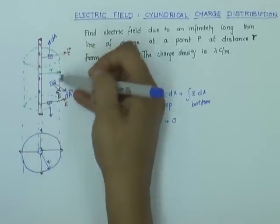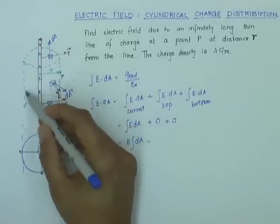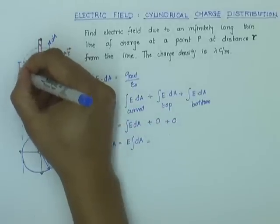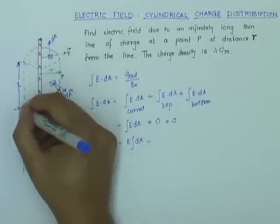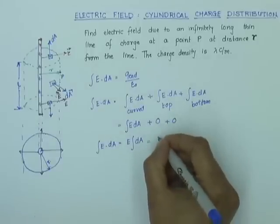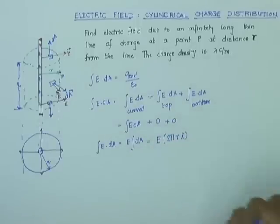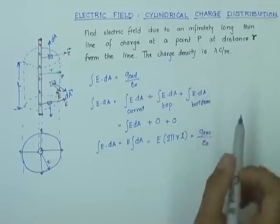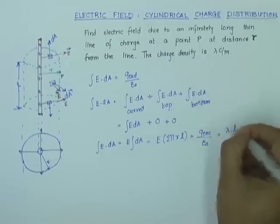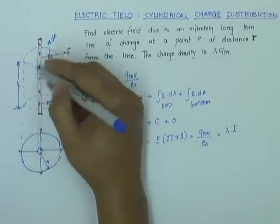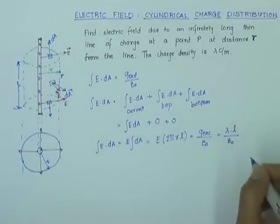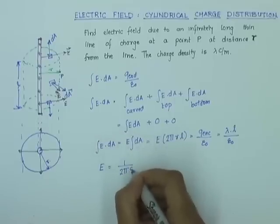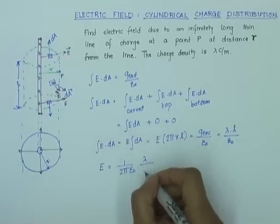So the total flux through the Gaussian cylinder reduces to the flux through the curved side only. The area of the curved section is 2 pi r (the circumference) times l (the length of the Gaussian cylinder). So I have E times 2 pi r l equals Q enclosed over epsilon-zero. The charge density is lambda coulombs per meter, so Q enclosed equals lambda times l.